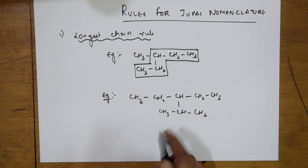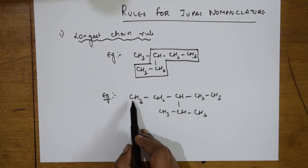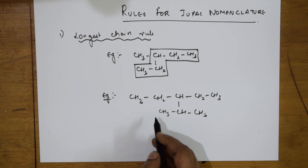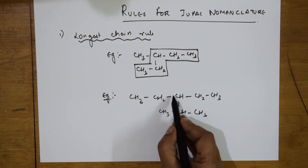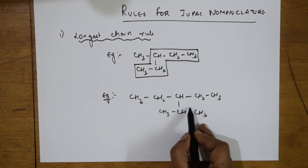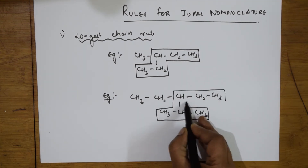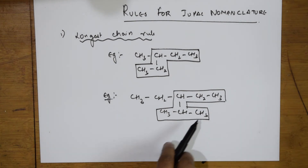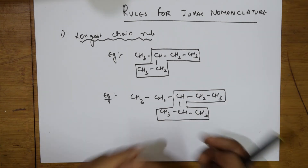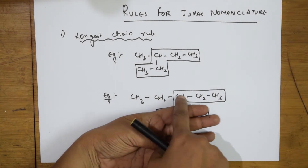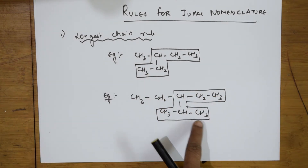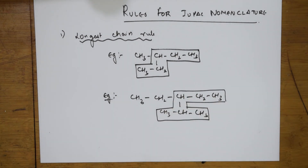In another example — CH3-CH2-CH2-CH3 with a side chain — if I draw the chain one way I get 1, 2, 3, 4, 5 only. But if I draw the chain including the substituent, I get 1, 2, 3, 4, 5, 6. So this is the longest chain rule: you have to always find the longest chain whenever you are finding the nomenclature.